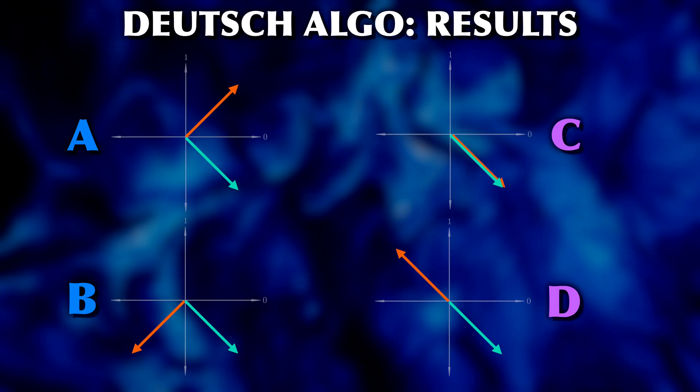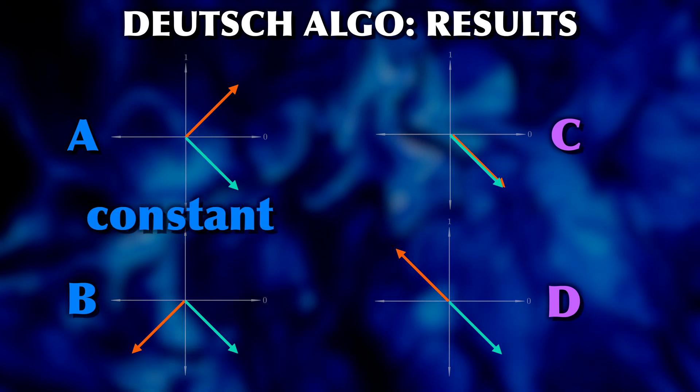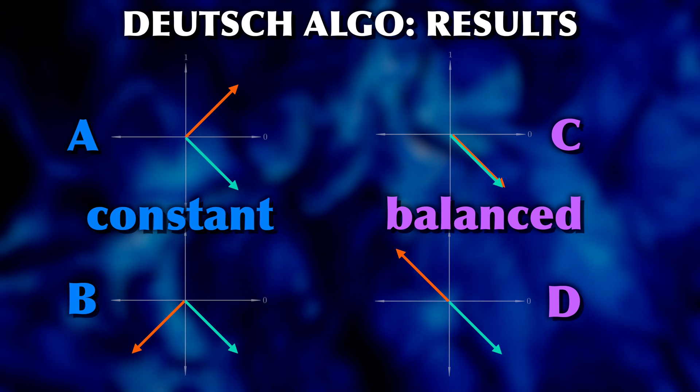So we have to be smarter than that. We can see the following. In cases where the function f is constant, the two qubits form a right angle. While in all cases where f is balanced, they are parallel. This is of course no coincidence. The algorithm has been carefully constructed to give exactly this result.